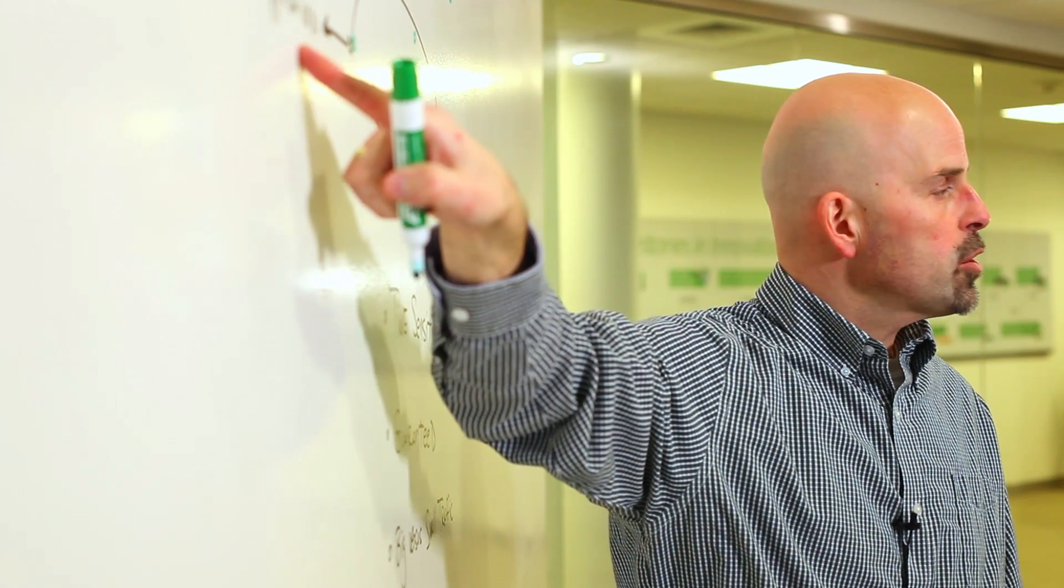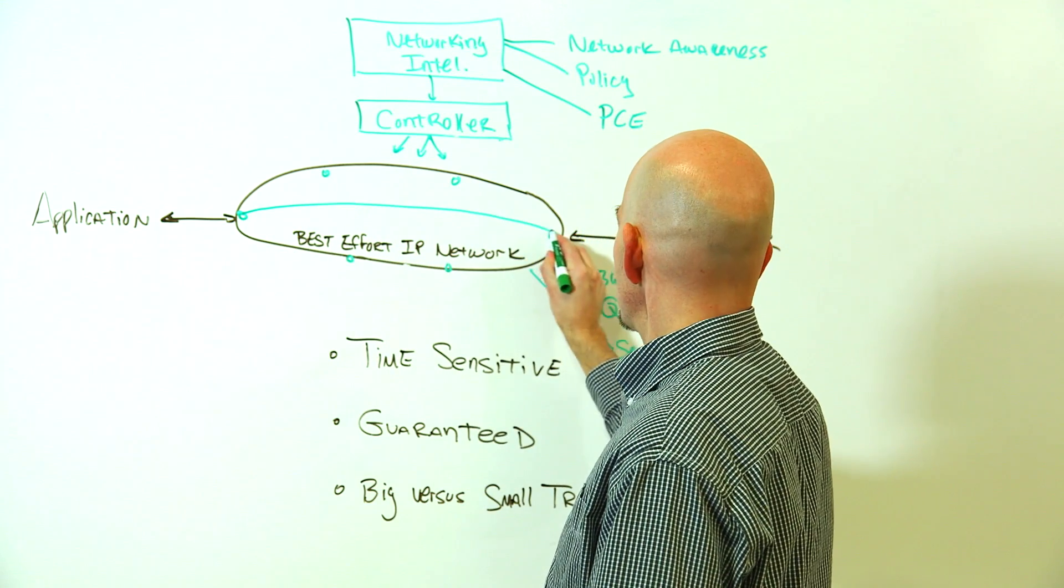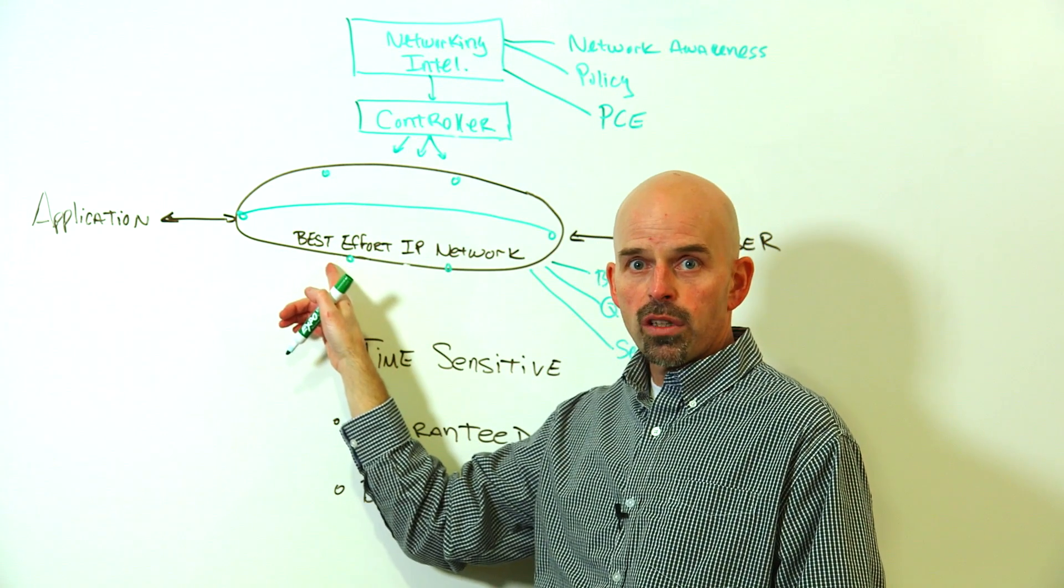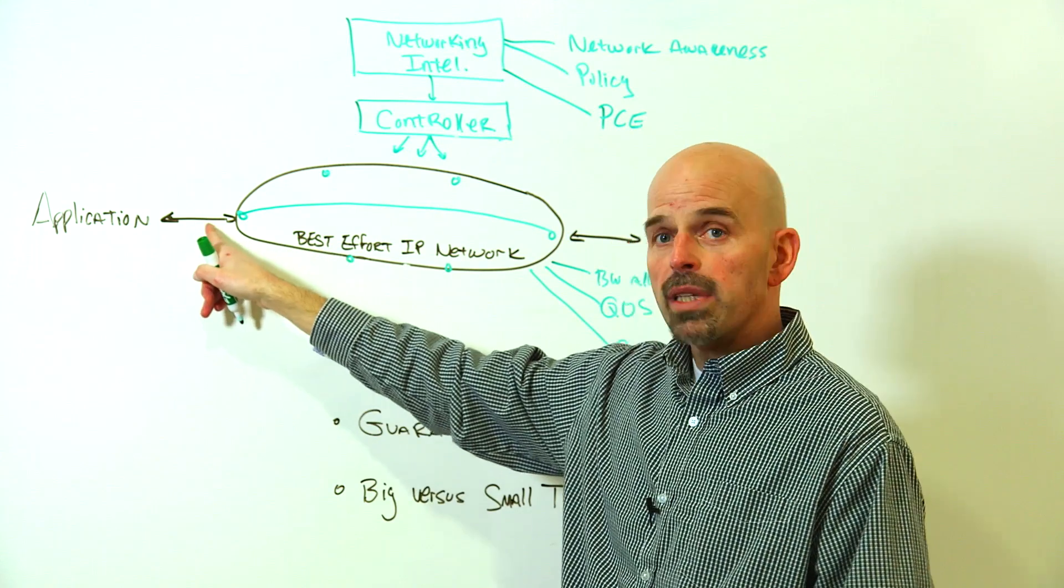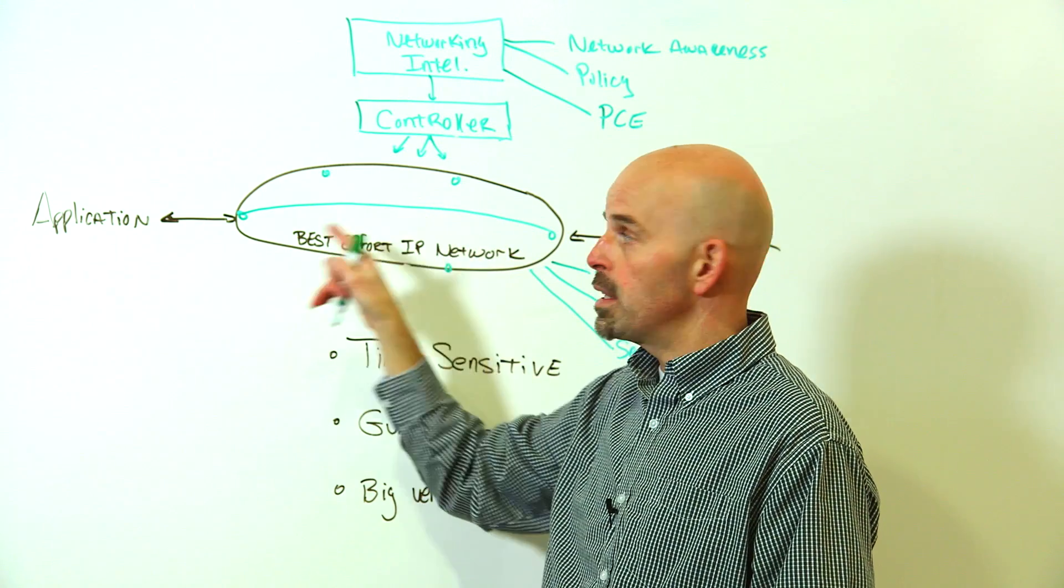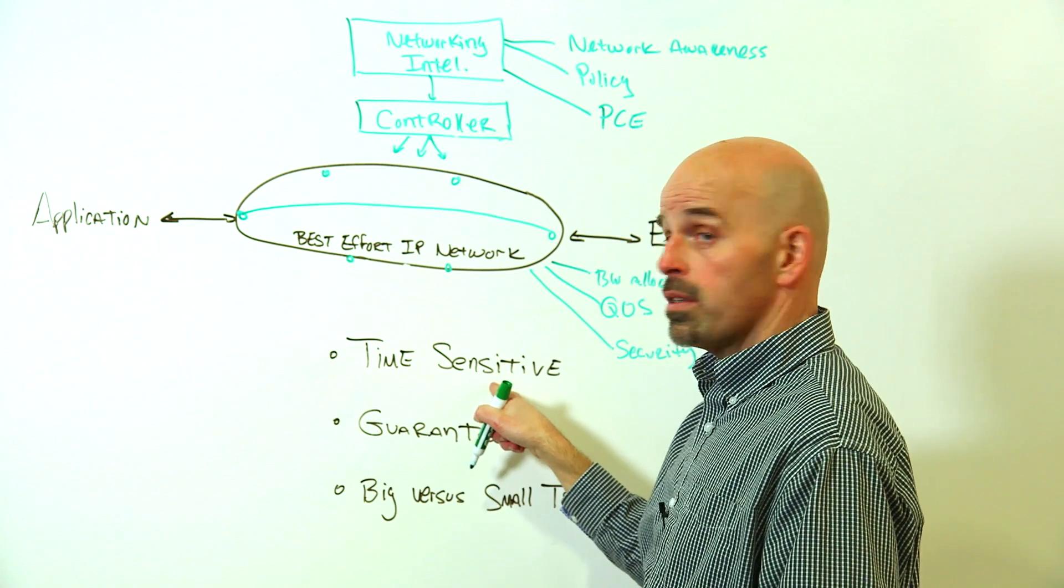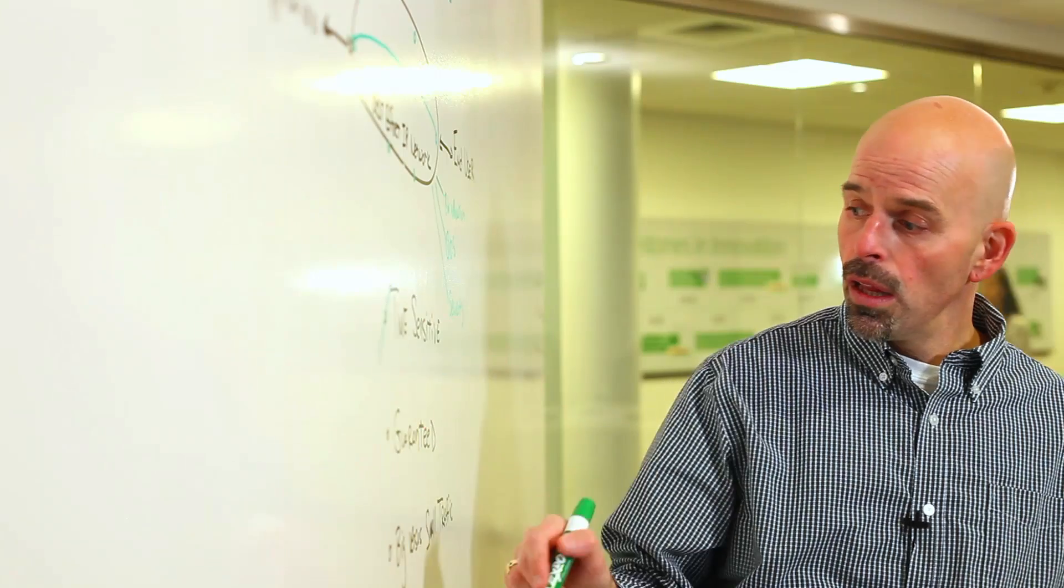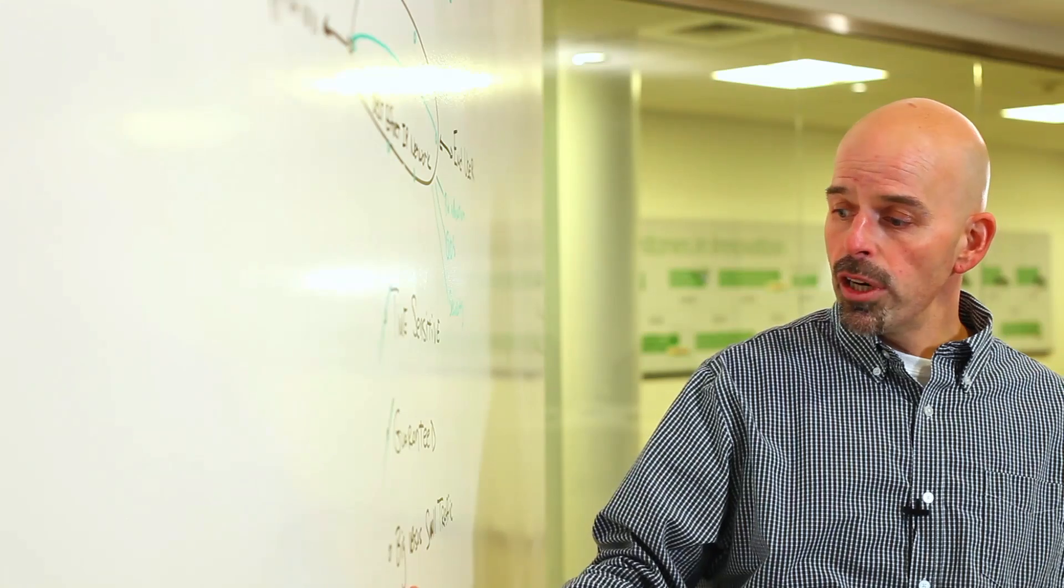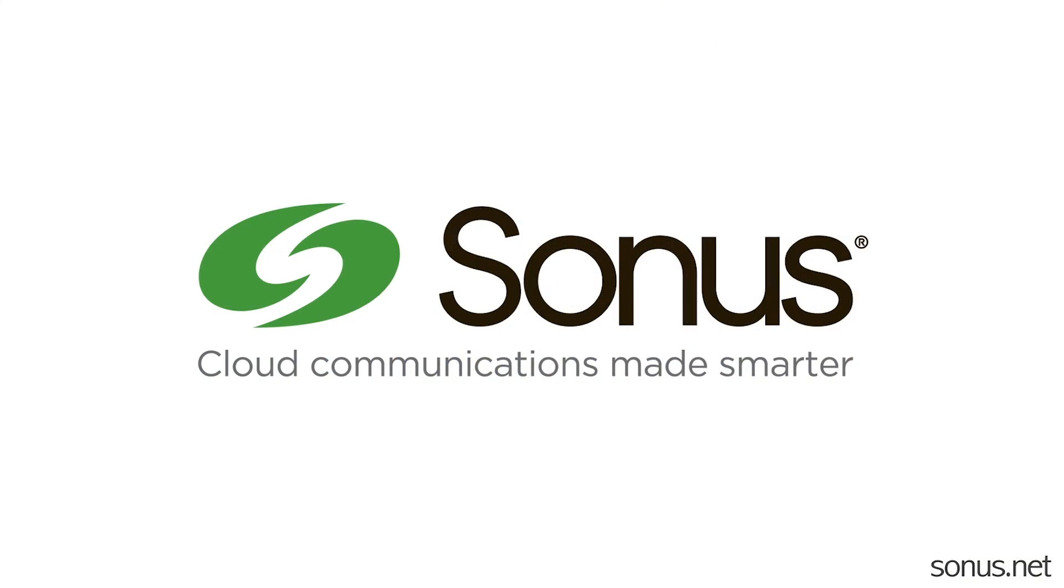You can now take an application service request in real time and connect that to the end user. You now have moved from best effort service delivery to a connection between the application and the end user that is guaranteed to implement the needs of the application. Those guarantees can meet time sensitivity requirements, guaranteed or assured delivery requirements, differentiation between big and small traffic types.